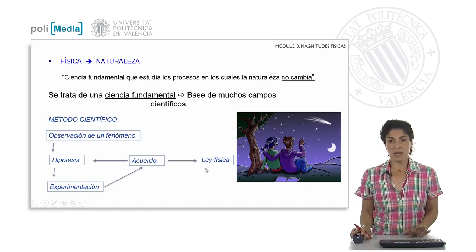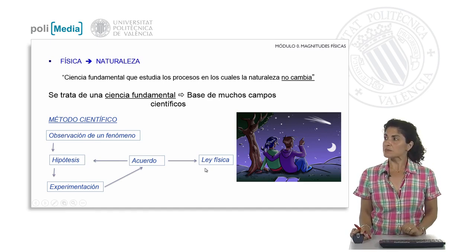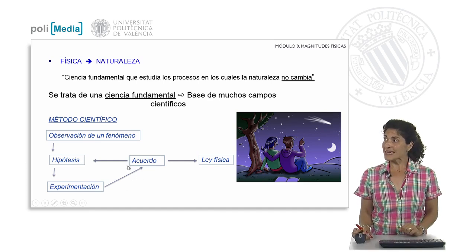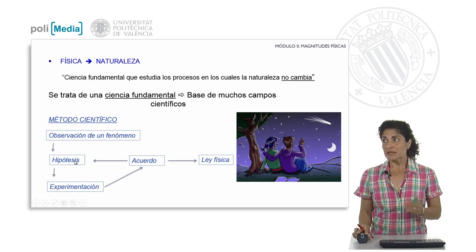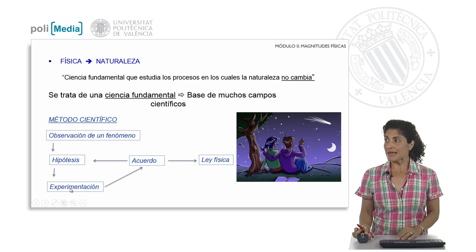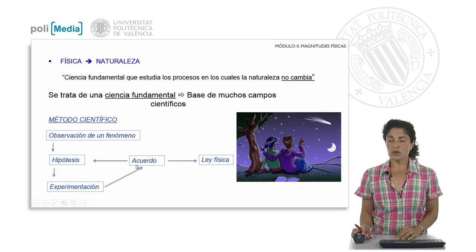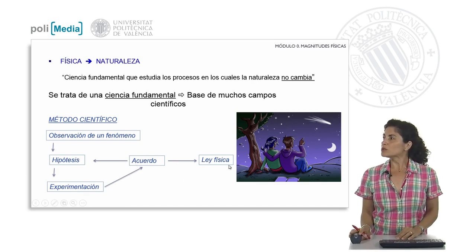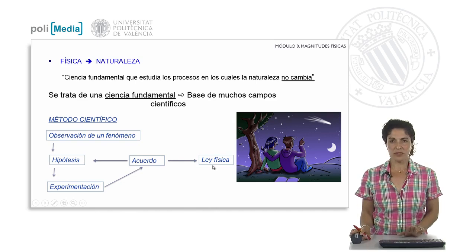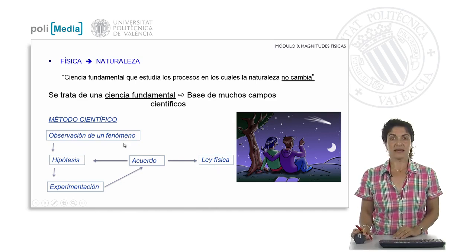If there is some small disagreement between those hypotheses and what we want to explain, what we will have to do is resort to new hypotheses, or rethink some of the first ones so that, from experimentation, little by little we will achieve 100% agreement. In the end, we will arrive at the concept of the physical law and its global formulation that allows us to explain the phenomenon that was of interest to us.